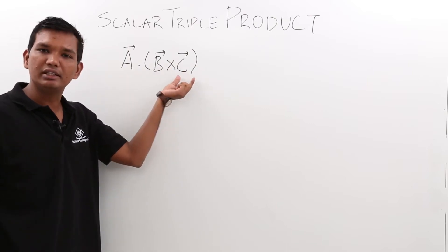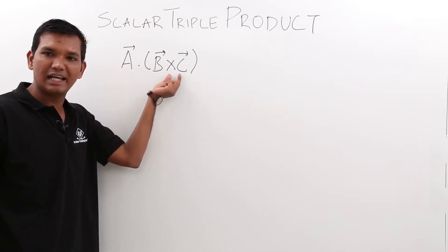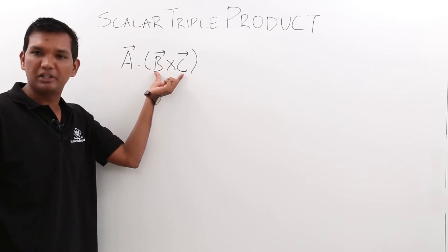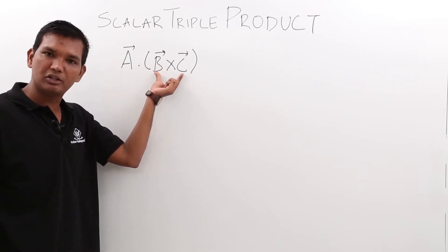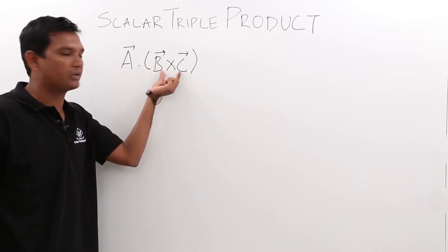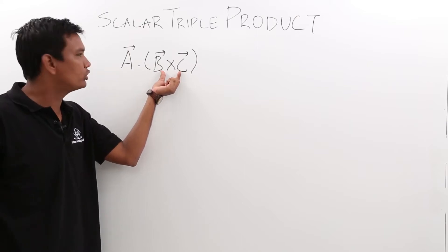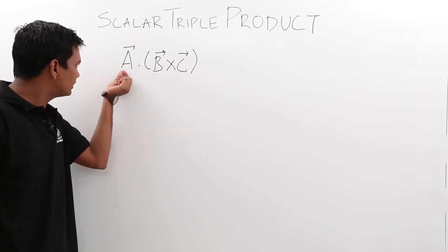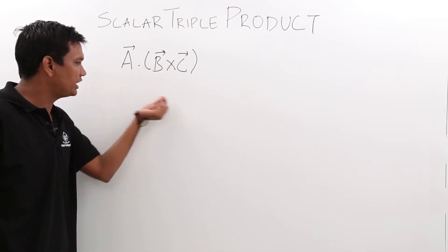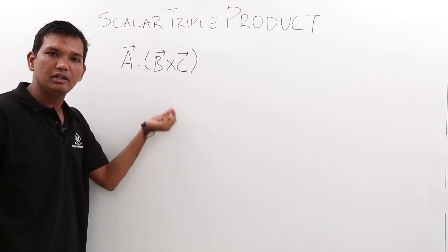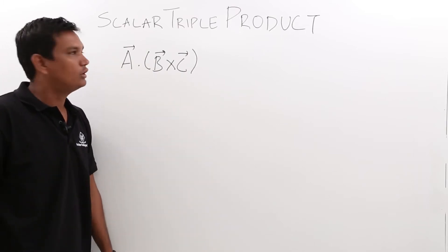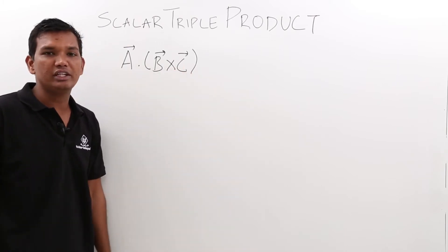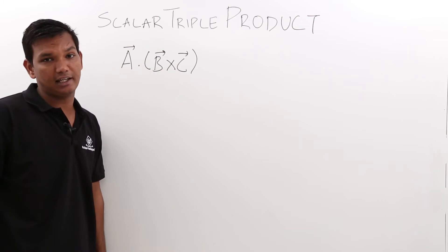Before concluding the example, we know that b cross c is a cross product, and the result of a cross product is always a vector quantity. When this is a vector quantity, if I take a dot product, it would be a scalar quantity. So before concluding the question, we know that the answer should be a scalar quantity.